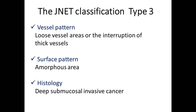J-Net Type 3 lesions show loose vessel areas and the interruption of thick vessels as a result of the destruction of vessel structures by cancer. Similarly, the surface pattern also becomes amorphous due to the invasion of cancer. J-Net Type 3 refers to deep submucosal invasive cancer.